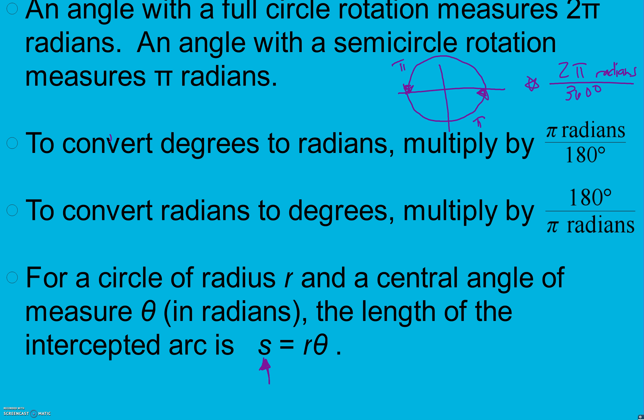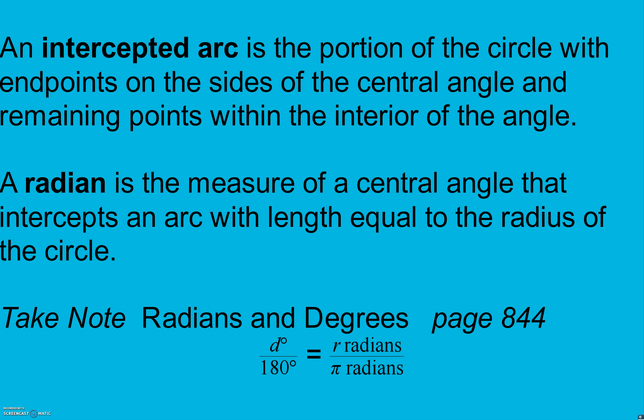Take note, radians and degrees on page 844: D degrees over 180 equals R radians over π radians. That helps us convert between degrees and radians. They're proportions. As long as we're comparing half circles over full circles, we can compare the parts.